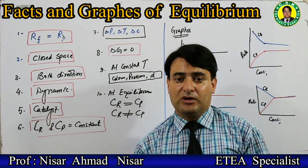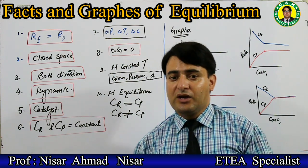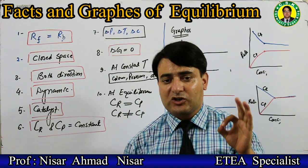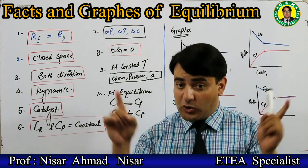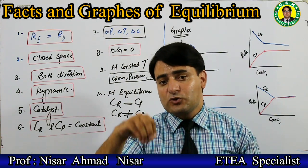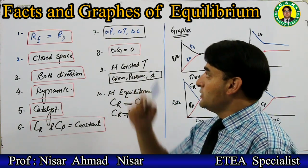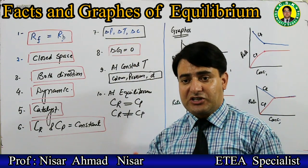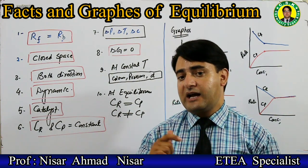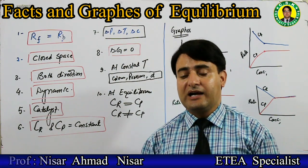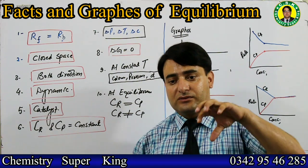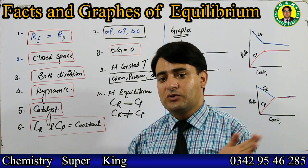The concentration of reactants and products at equilibrium are not always equal, but they are always constant. Equilibrium can be disturbed, and factors such as change in pressure, change in temperature, or change in concentration can favor only one direction and cause the shifting of the reaction from equilibrium in a particular direction.